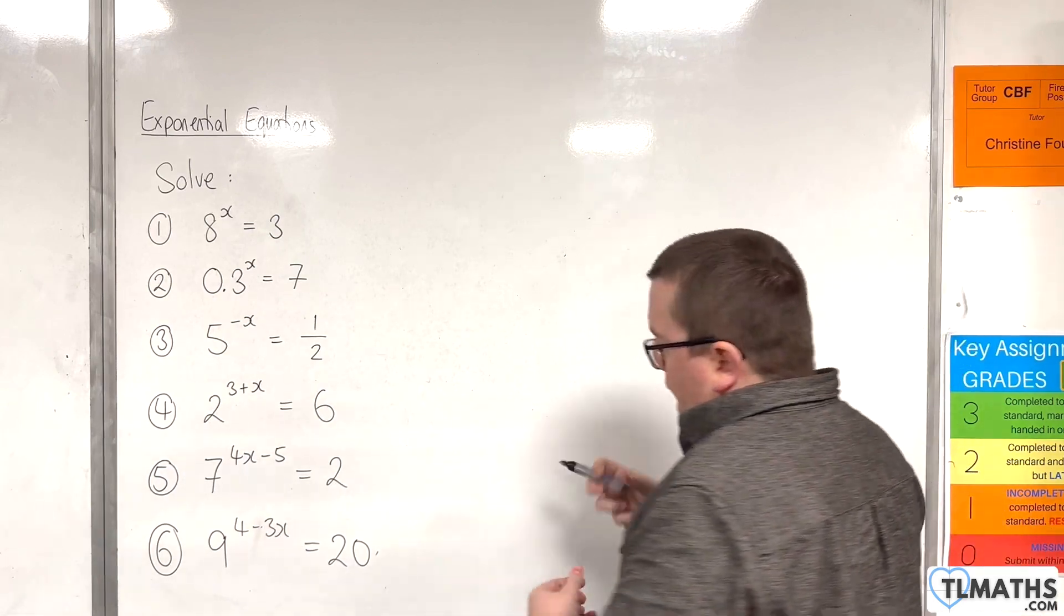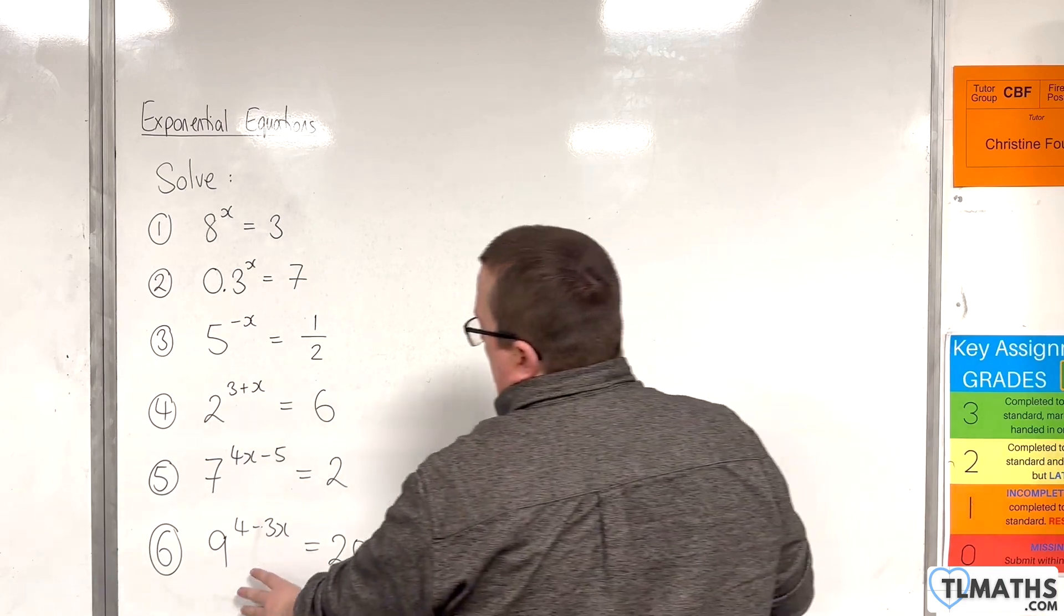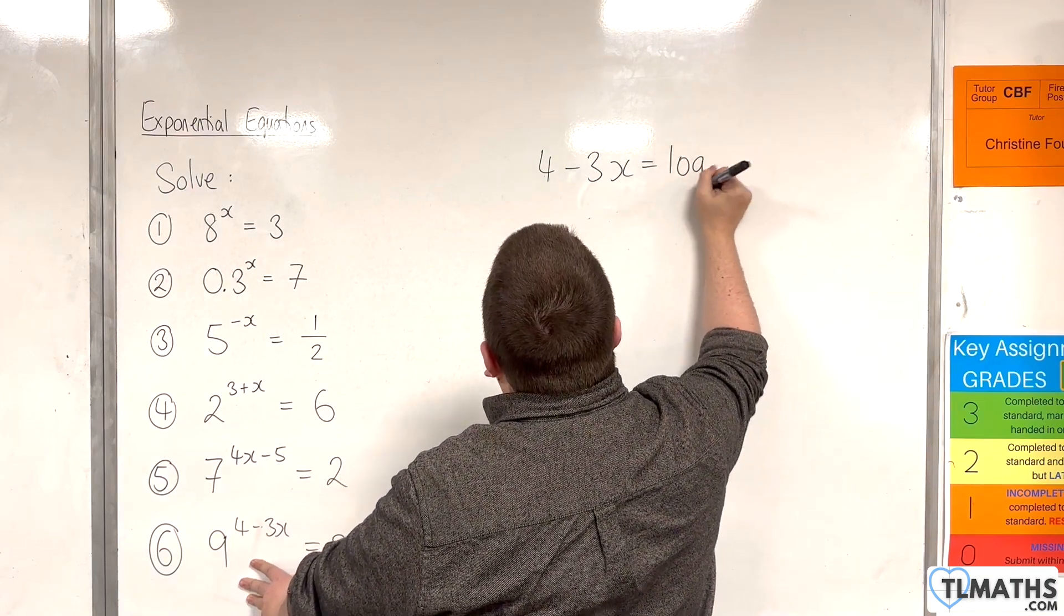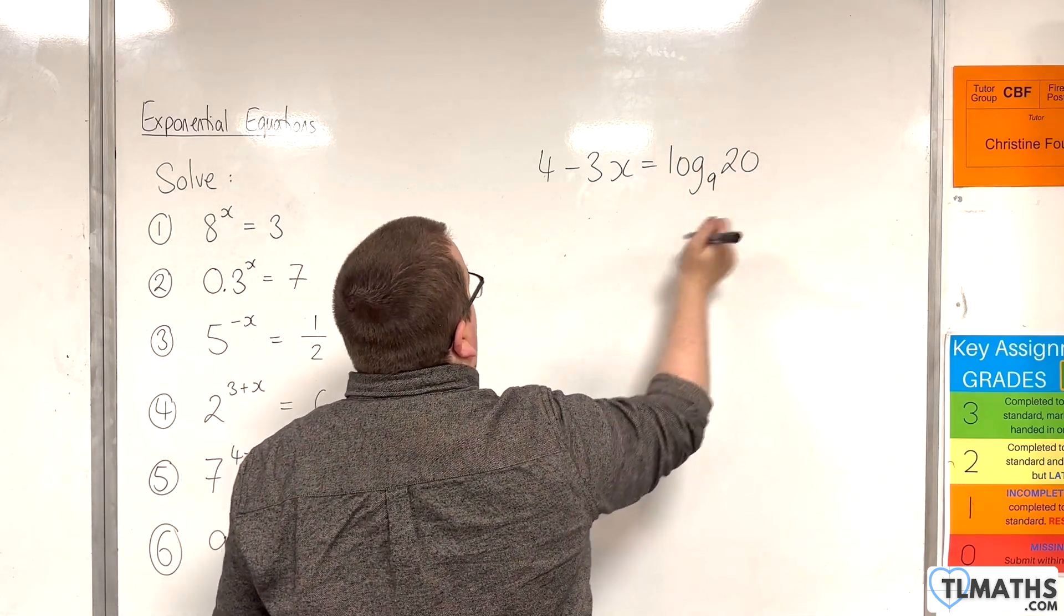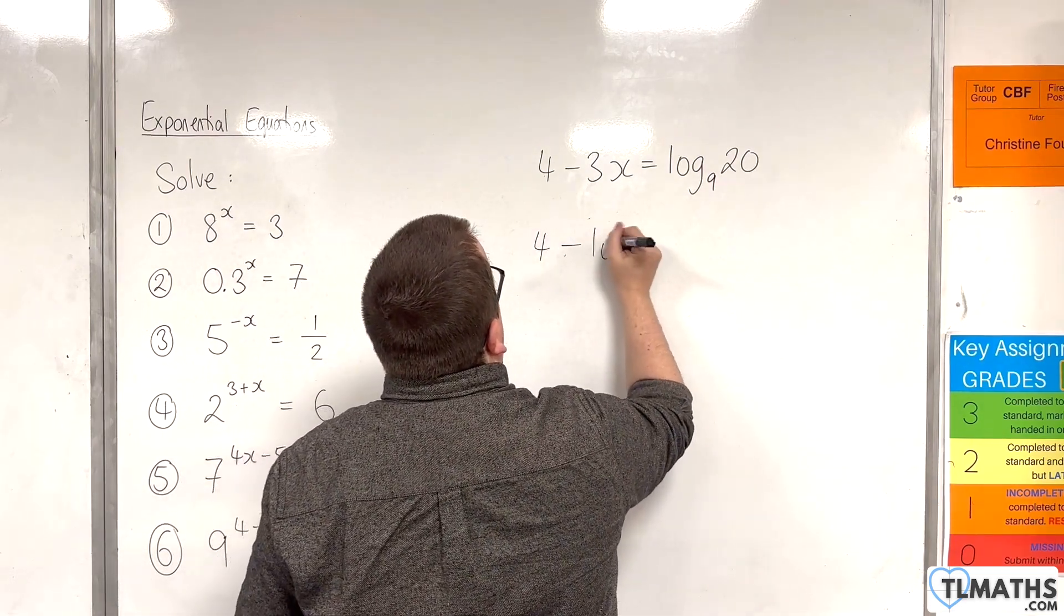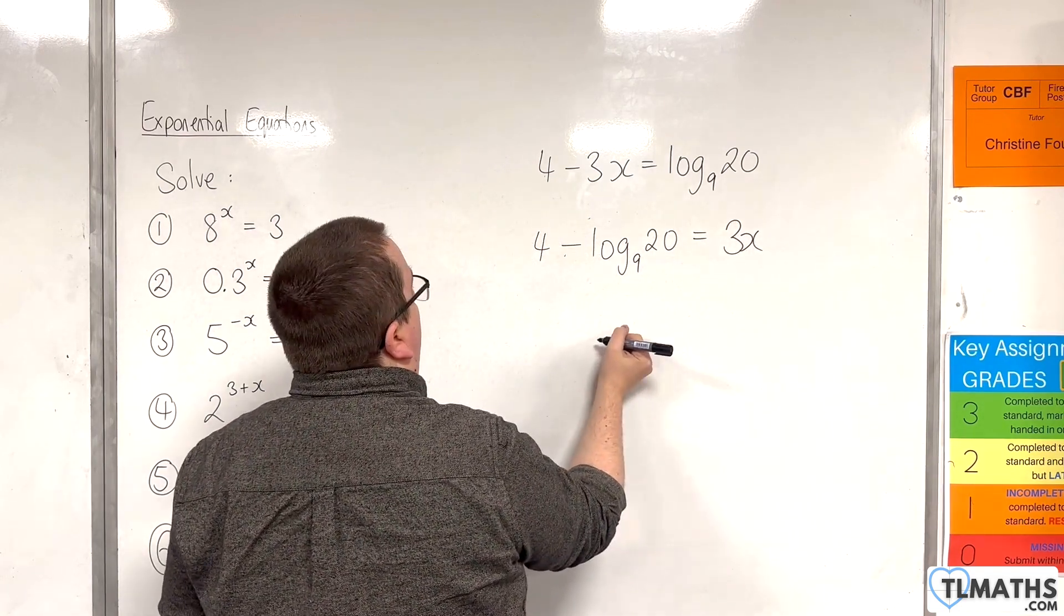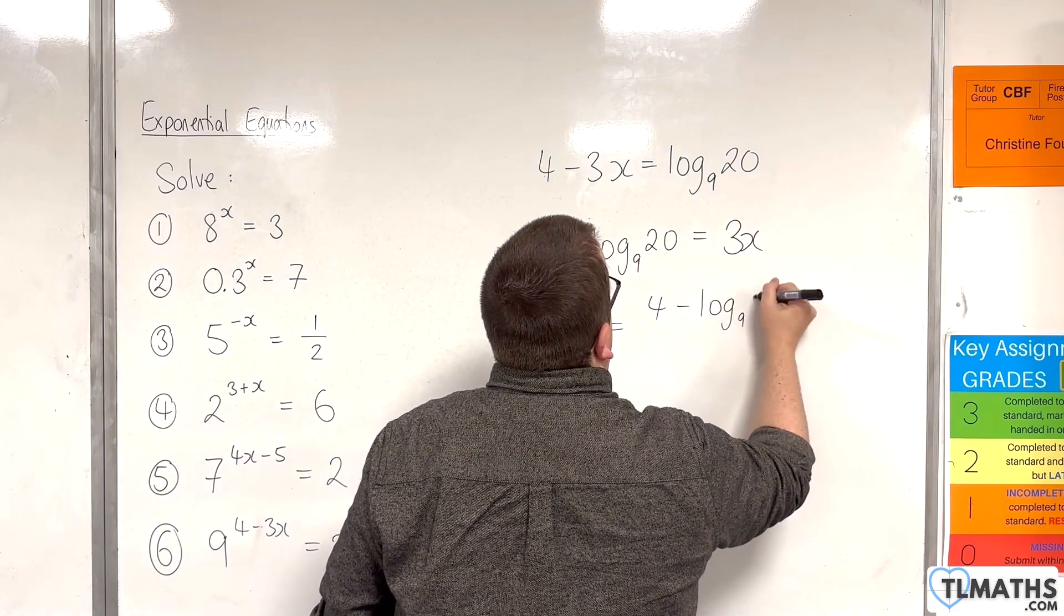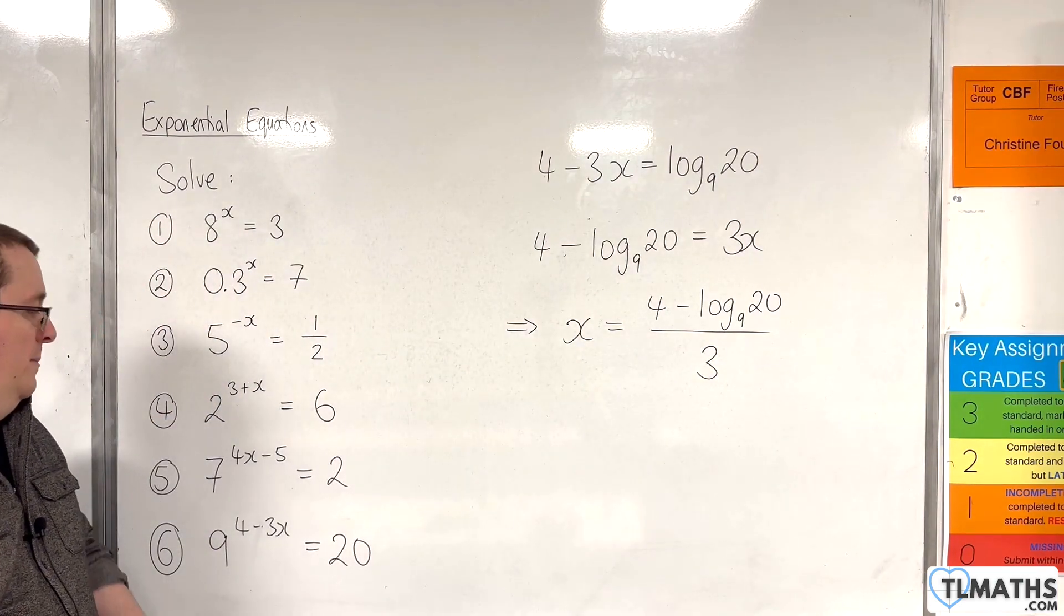Number 6. 9 to the power of 4 take away 3x is equal to 20. Go from exponential form to logarithmic form. We'll have 4 take away 3x is log base 9 of 20. So I'm going to add the 3x to both sides and subtract log base 9 of 20 from both sides. So 4 take away log base 9 of 20 is equal to 3x. And then we can divide through by 3. So x will be 4 take away log base 9 of 20 over 3. And that's the exact answer to number 6.